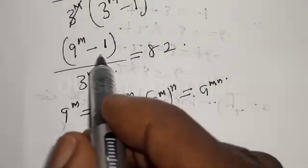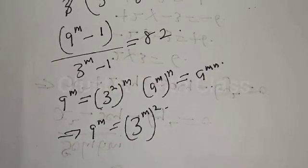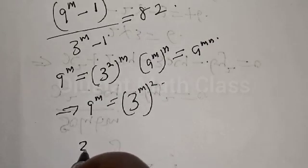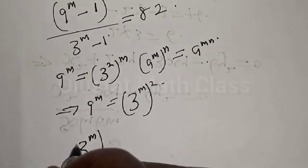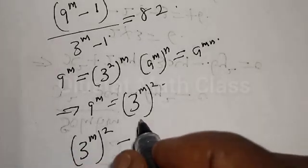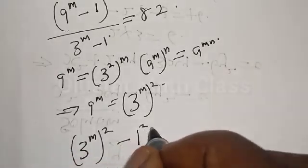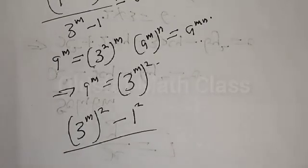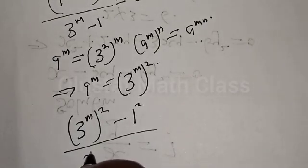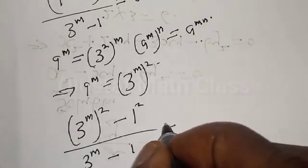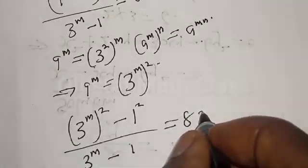Back to the equation, we have 3 raised to power m, squared minus 1 squared — which is the same as 1 squared — over 3 raised to power m minus 1, equal to 82. Note that 9 raised to power m can be expressed as 3 raised to power m, squared.